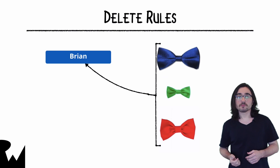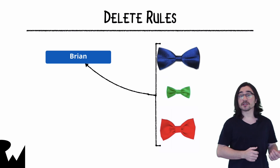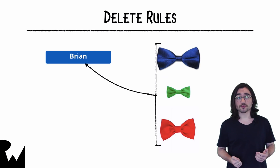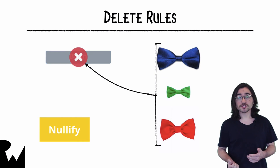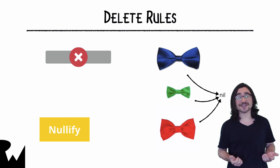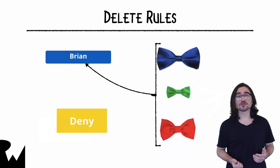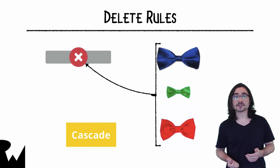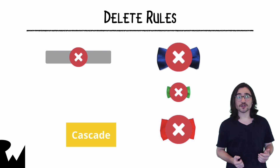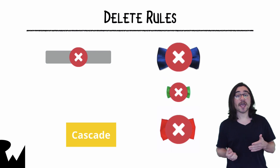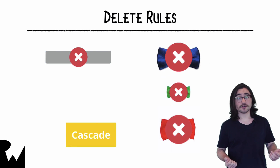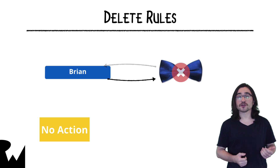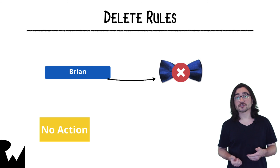After two objects have been associated with a relationship, there are a few ways you can have one object react to the other one being deleted. Each relationship has its own delete rule attached, which can be changed in the model editor. There are four possible delete rules. By default the nullify option is chosen — if you delete a person, all bowties who had that person as their owner get their owner property set to nil. The second option is deny, which means you can't delete a record if it has any other objects associated with it. The third option is cascade, meaning deleting an object will also delete all the objects it has a relationship with — for example, if one person owned all the bowties and was deleted, every bowtie would get deleted right along with them. The fourth and final option is no action, which means it's your job to clean things up. If you delete a bowtie and forget to fix any person object that claims to own that bowtie, you may run into trouble later with a dangling reference.